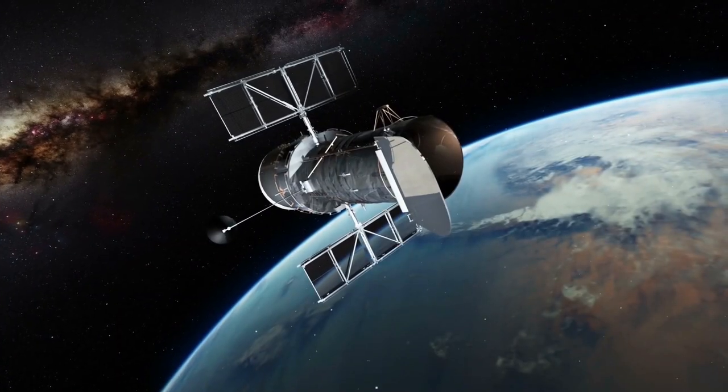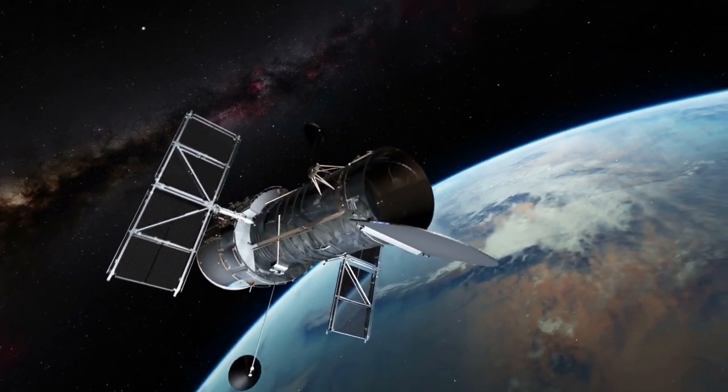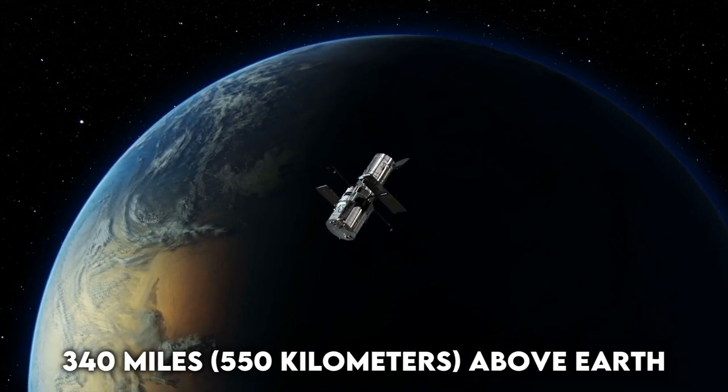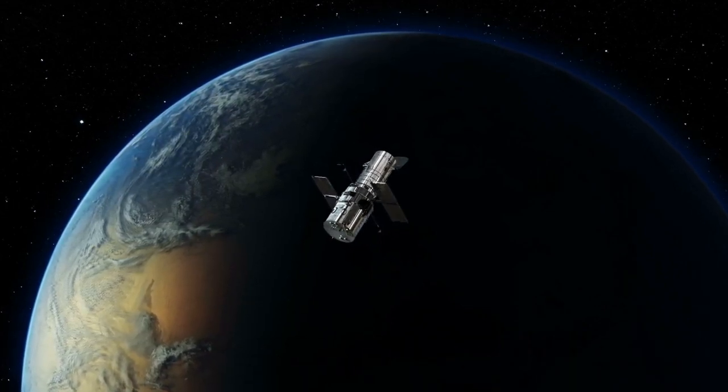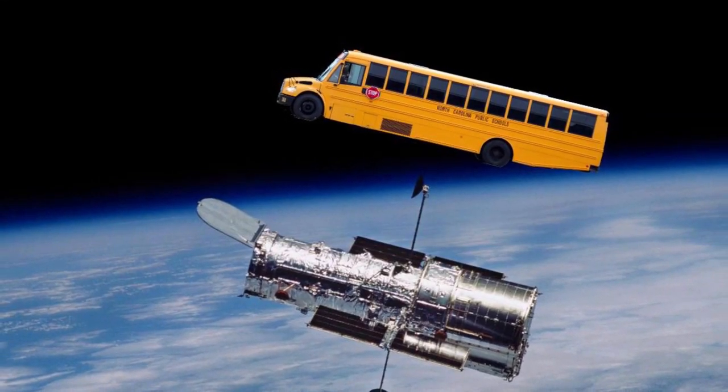The Hubble Space Telescope was launched on April 24, 1990, when the Space Shuttle Discovery put it into orbit about 340 miles (550 kilometers) above Earth. Hubble weighs as much as two mature elephants and is the length of a large school bus.